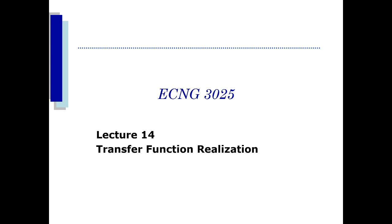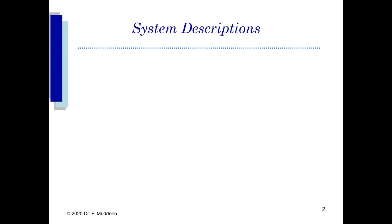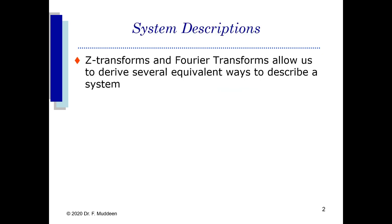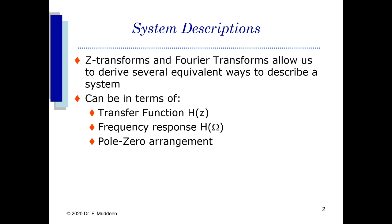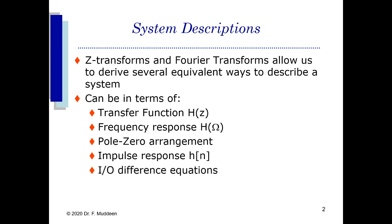Today's lecture is on transfer function realization based on the Z-transform. The Z-transform and Fourier transform allow us to derive several equivalent ways to describe a system: the transfer function H(Z), the frequency response H(ω), a pole-zero plot, an impulse response h(n), and an input-output difference equation. The one we're going to be looking at today is the block diagram description.